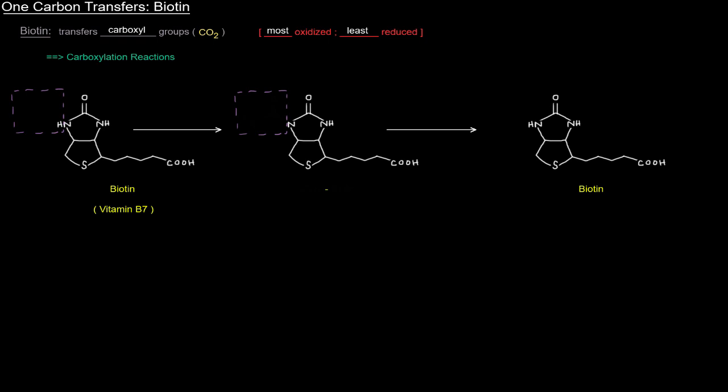We start off with biotin in this form, and it's going to grab the carboxyl group to be donated, right? The carbon dioxide, and it's going to attach at that portion of the molecule there. So we'll have that carboxyl group, and that'll create basically a carboxylated biotin. And that carboxylated biotin is what actually gives up that carboxyl group to another molecule. And when it does that, it regenerates biotin in the form that we started with, so that the reaction can happen again.